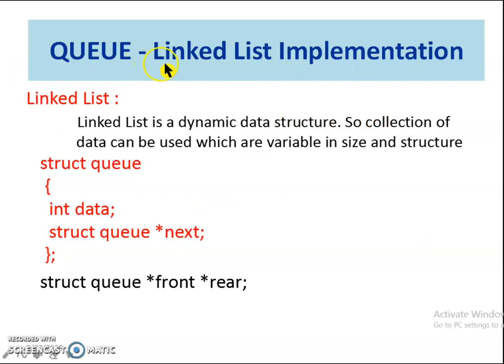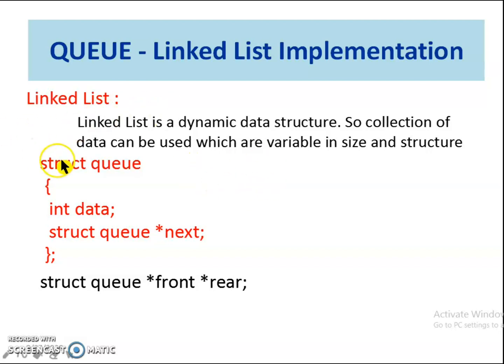Next, let us see the linked list implementation of queue. The linked list is a dynamic data structure, so the collection of elements can be variable in size and structure. The advantage of using a linked list is that we need not worry about the size of the queue. The queue is a collection of nodes, dynamically created when required, so there won't be a queue-full condition. Moreover, if elements are no longer needed, those nodes can be freed. The structure of the linked queue is defined as struct queue with a data field and a next field of type struct queue. Two pointers, front and rear, point to the front and rear end of the queue, declared of type struct queue.